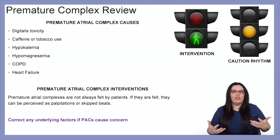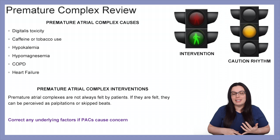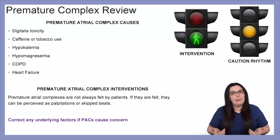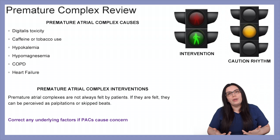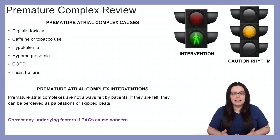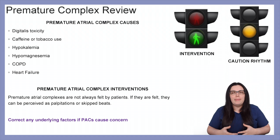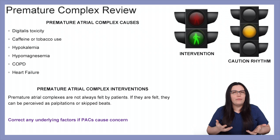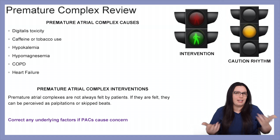Premature atrial complex causes can be digitalis toxicity, caffeine, or tobacco use. You could have low potassium as well as low magnesium present. Our COPD patients can exhibit this as well as our heart failure patients. Premature atrial complexes are not always felt by our patients. If they are felt, they may be perceived as palpitations or even a skipped beat. In order to correct this, we have to identify the underlying cause of the PAC and determine if it's a concern or just something happening randomly.